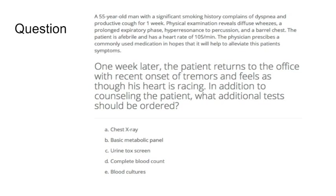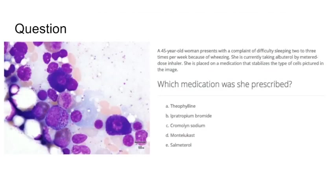The options are chest X-ray, basic metabolic panel, urine tox screen, complete blood count, and blood cultures. I'm not going to answer these questions right now — we'll go through it later. There is a similar question integrating pharmacology with physiology and histology that you can read and answer at your own leisure.